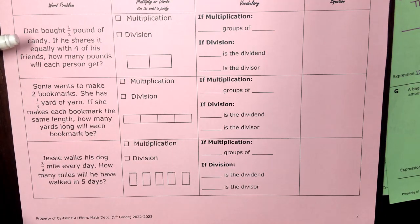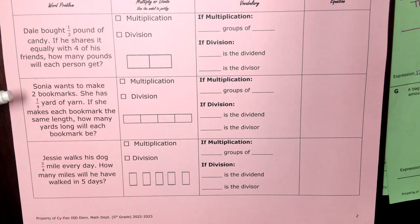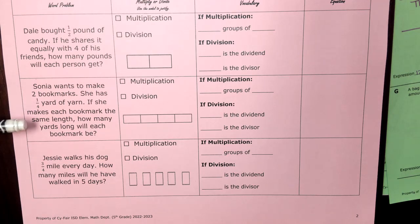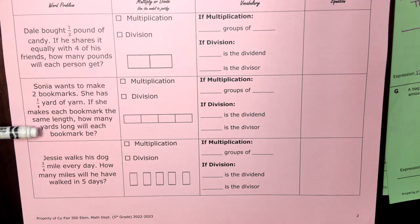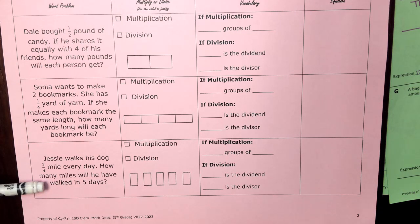The first story says: Dale bought one half pound of candy. If he shares it equally with four of his friends, how many pounds will each person get? Question two: Sonia wants to make two bookmarks. She has one fourth yard of yarn. If she makes each bookmark the same length, how many yards long will each bookmark be? And finally: Jesse walks his dog three-fourths mile every day. How many miles will he have walked in five days?